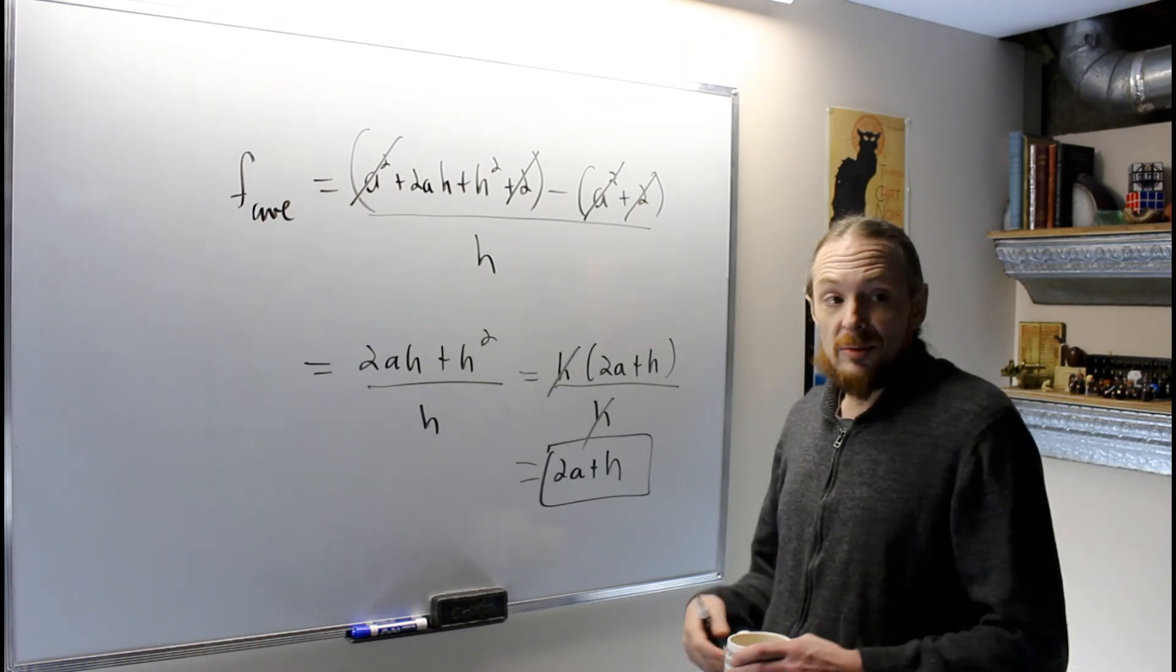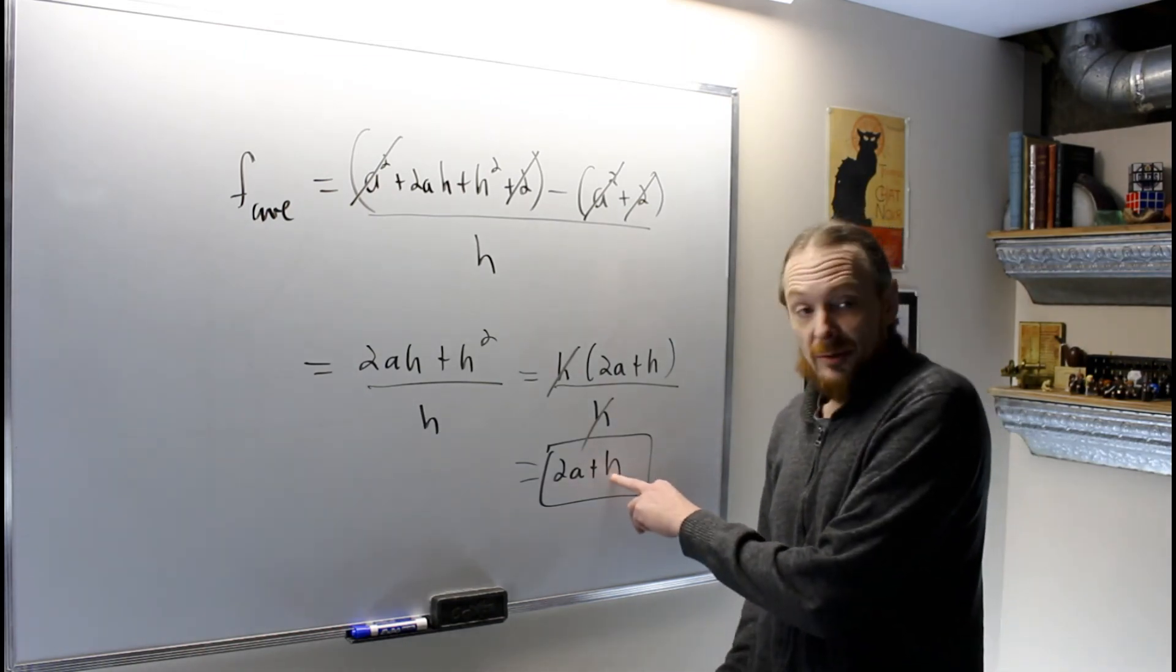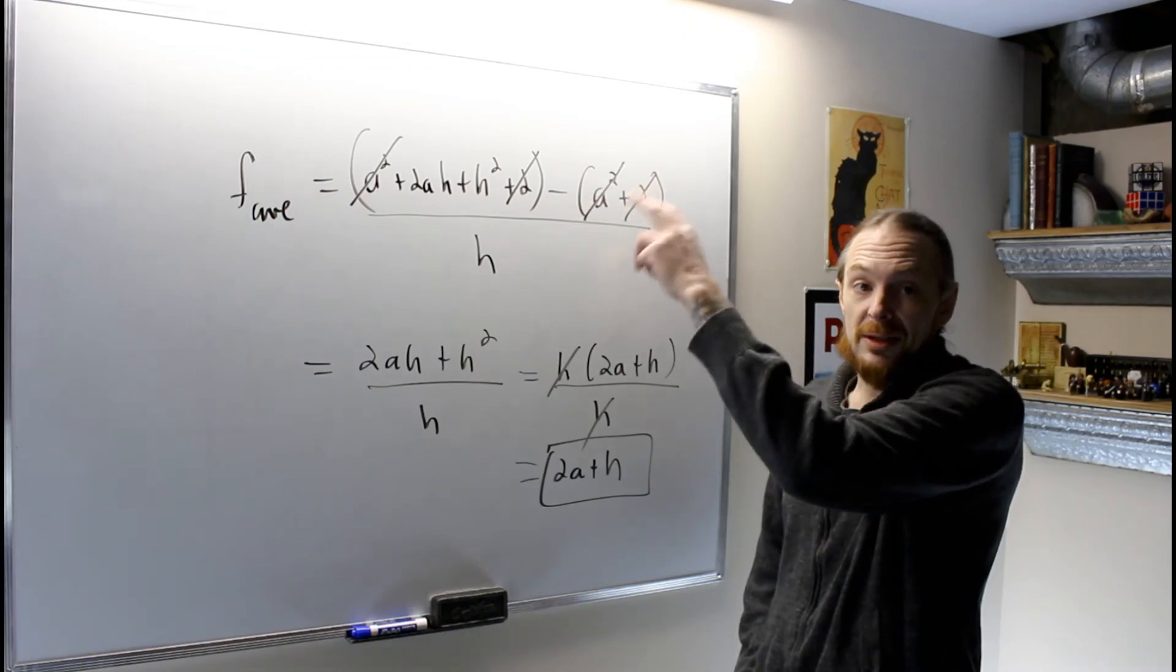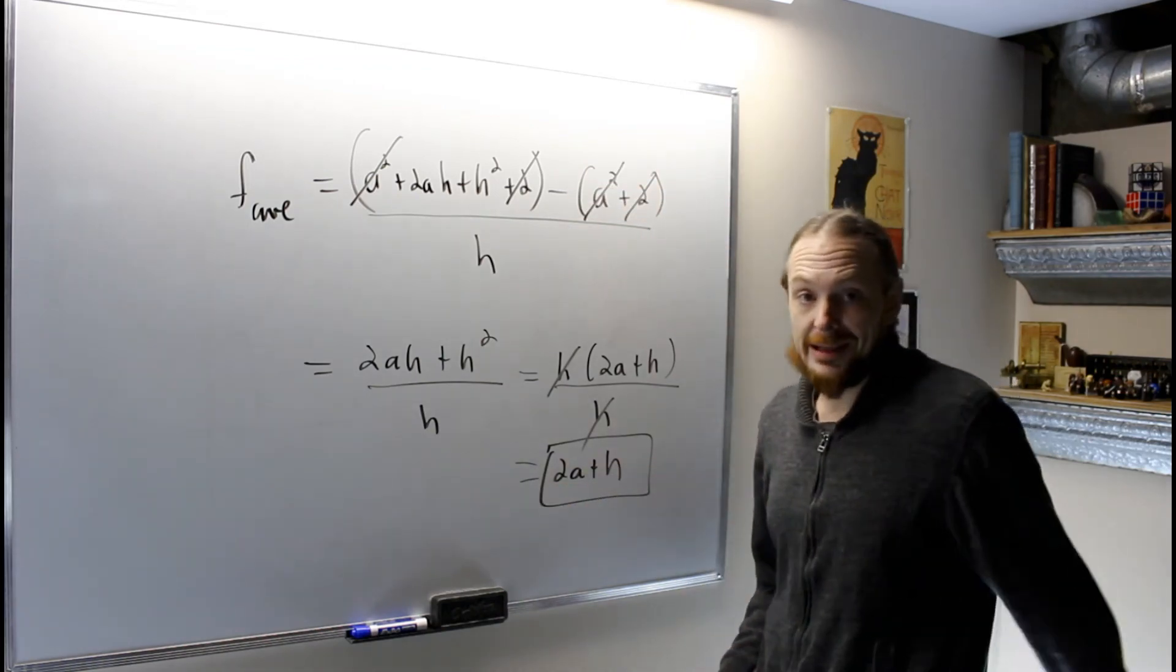Eventually, what we're going to do when you see this is compute derivatives when h goes to 0, and we'll say the derivative of x² + 2 is 2x when we actually take the derivatives with respect to x.